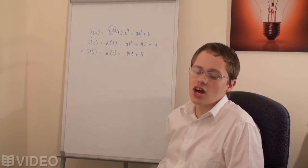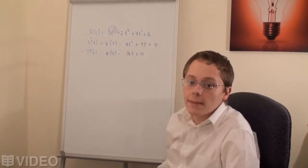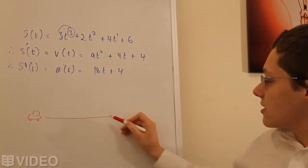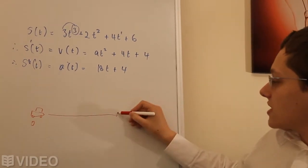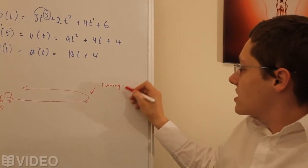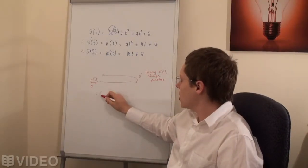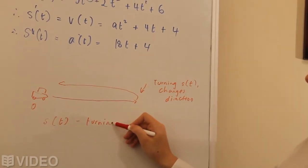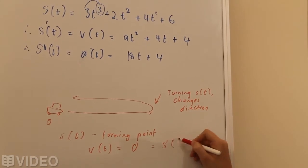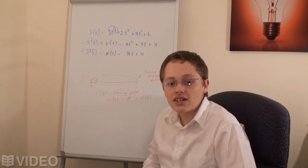Let's have a look at the displacement-time function. If we had a displacement-time function — and the one I'm going to draw is not representative of this cubic up here, but it will hopefully help you conceptually — if we have a little car headed in one direction on the displacement-time function and then it starts heading back, then the turning point on the s(t) function is where it changes direction. So the turning point on s(t) is where v(t), the velocity-time function, is going to equal zero, because v(t) is the first derivative of s(t). As a result, we can actually calculate when the object is going to change direction.